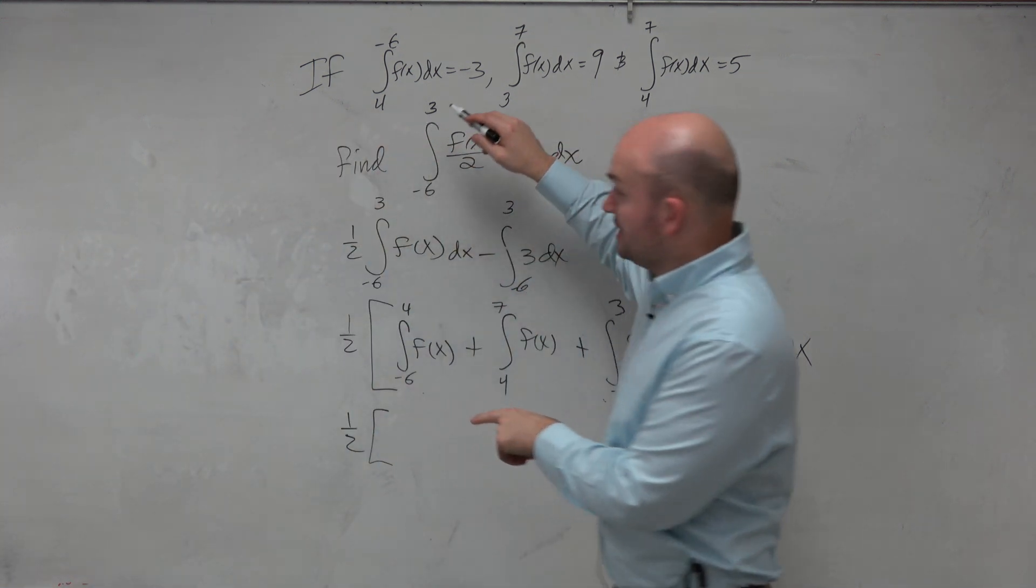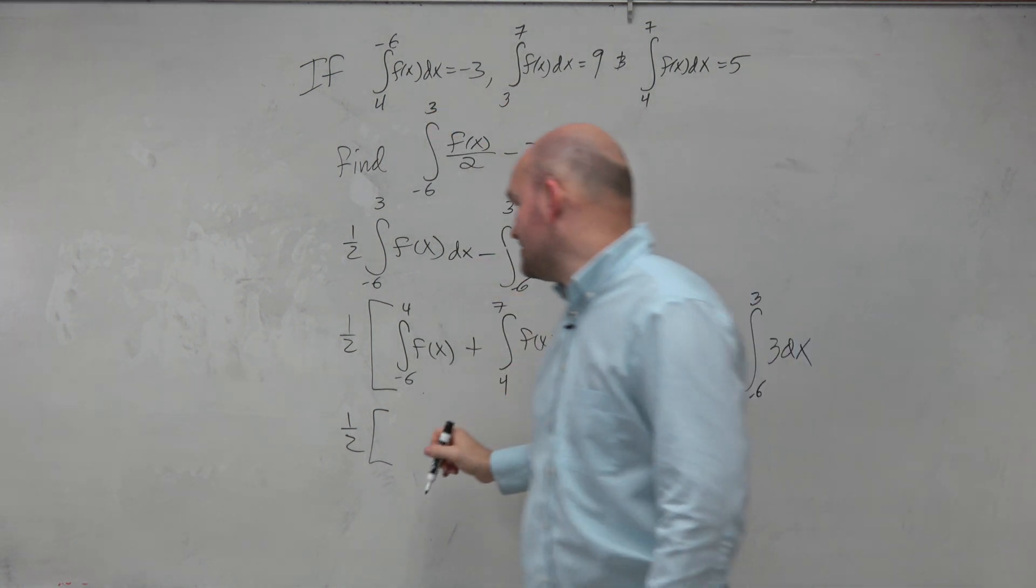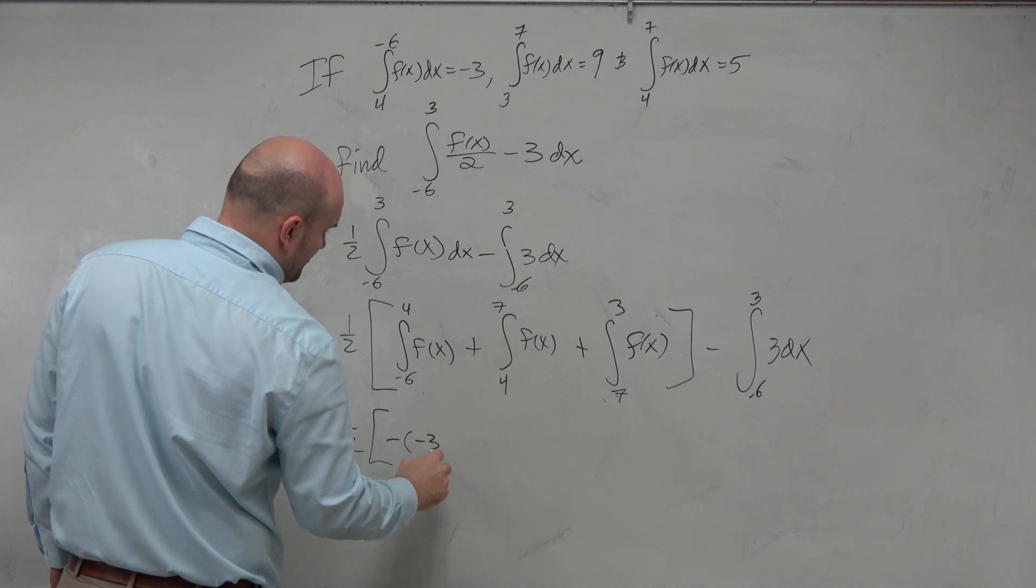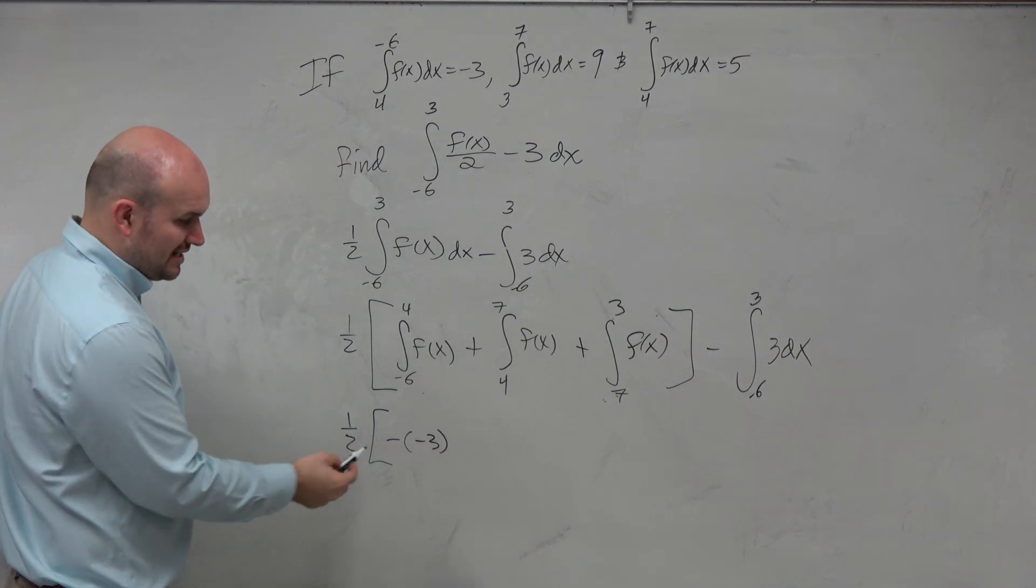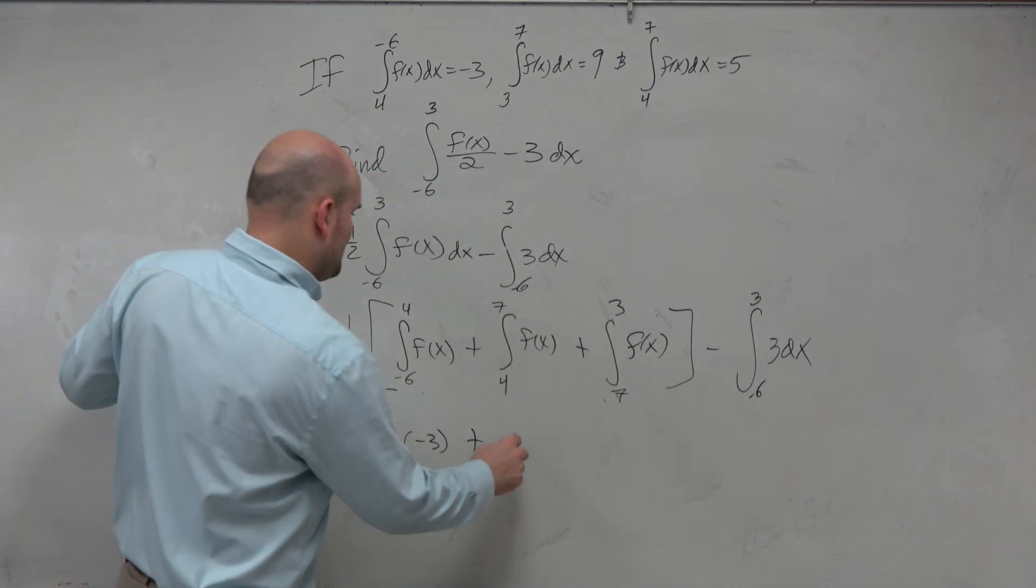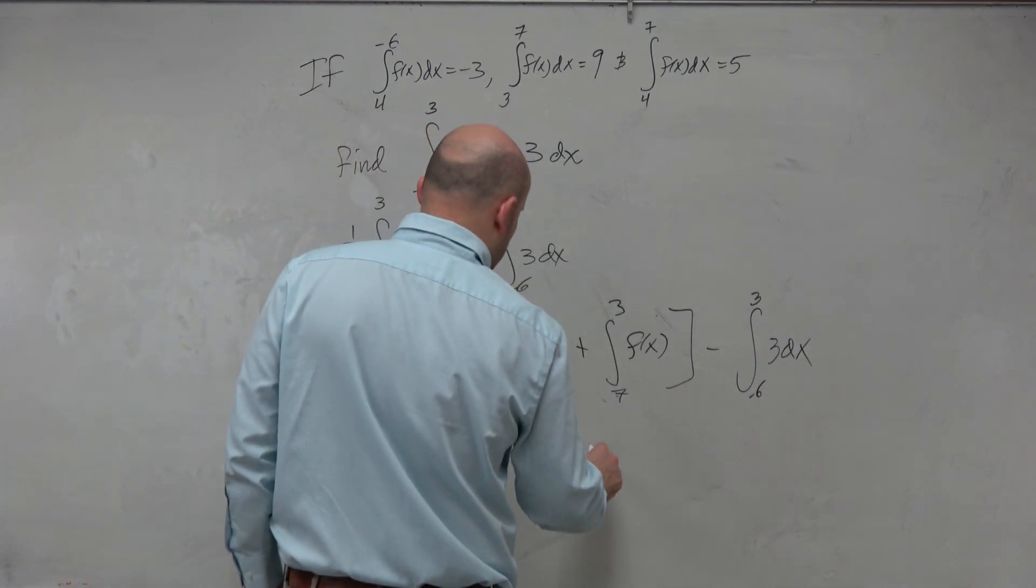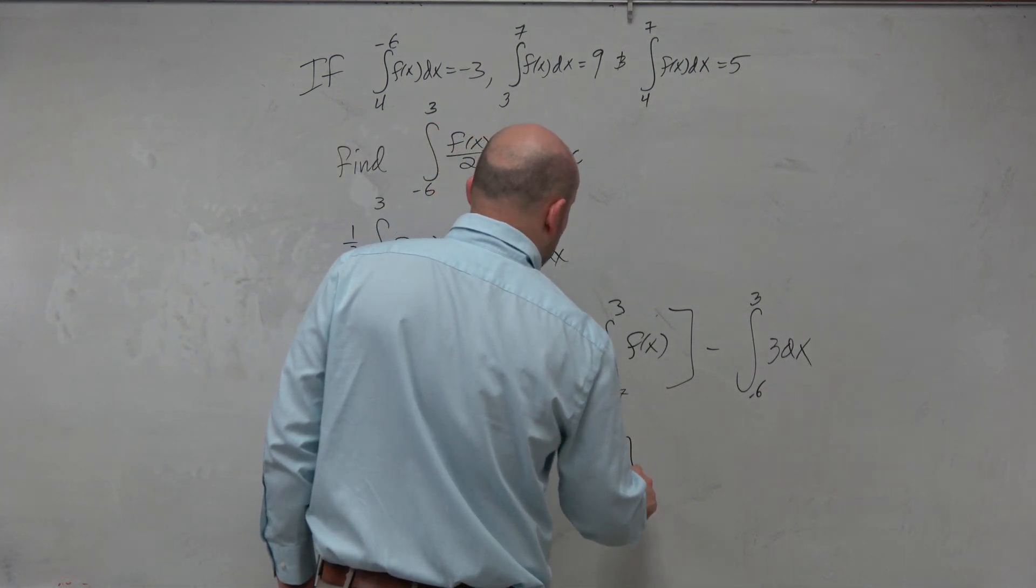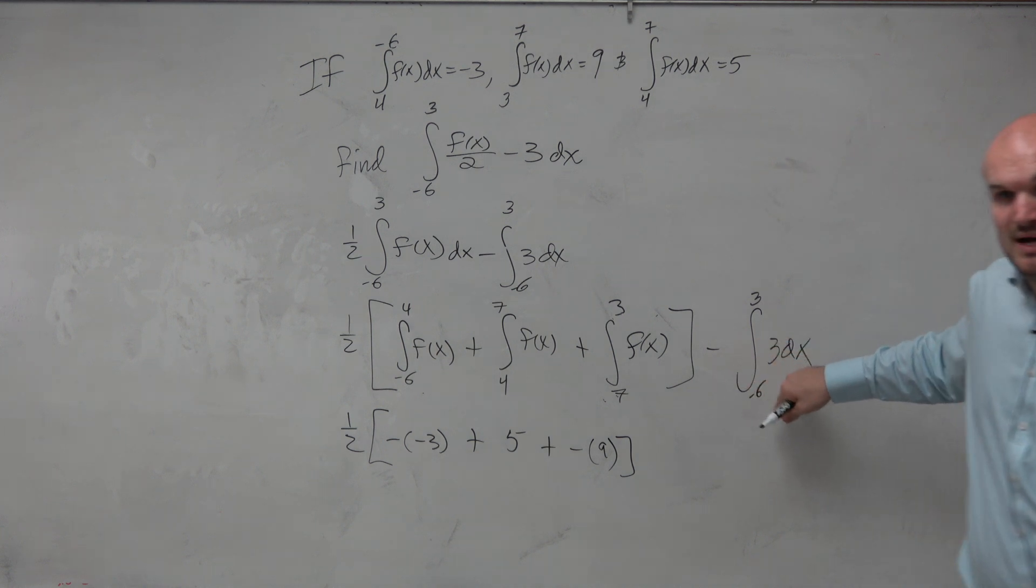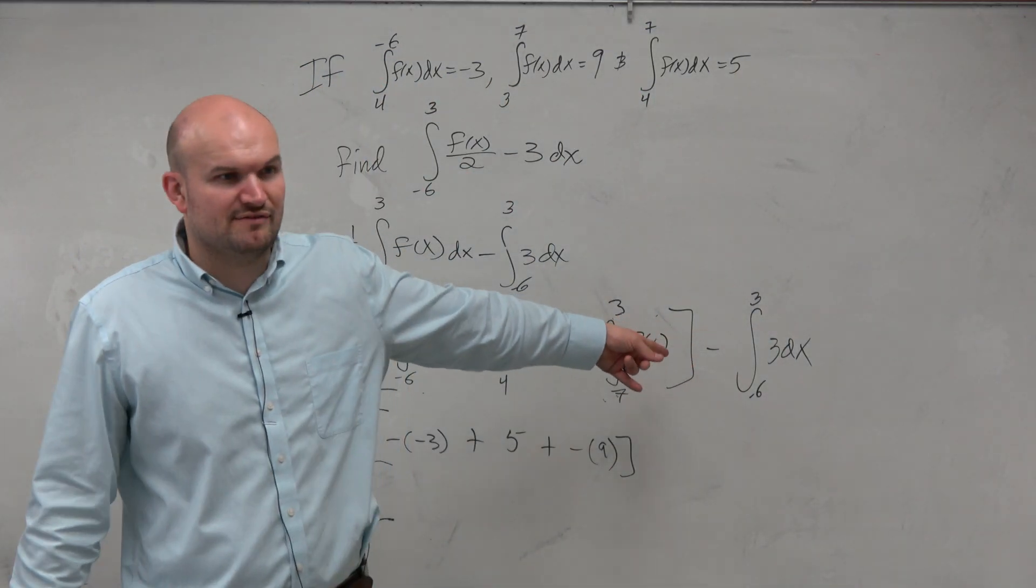Now let's get to the values. I have from negative 6 to 4, which I have but flipped. So if that's negative 3, then this one is now going to be, I'm just going to write it all out long term, negating it. Plus 4 to 7, we have that, so that's plus 5. And then from 7 to 3, that's the opposite of 9.